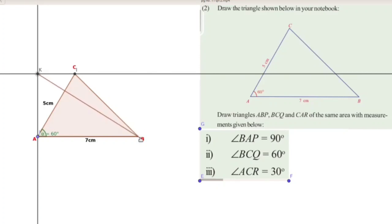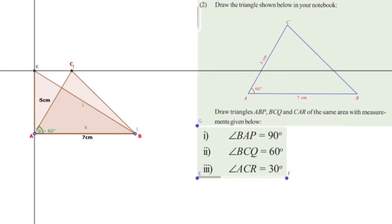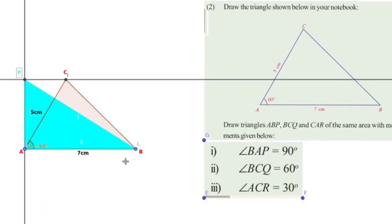This triangle is a right angle triangle with angle BAP equal to 90 degrees. Now we have triangle BAP, a right triangle with angle A equal to 90 degrees. This triangle is equal in area to triangle ABC — both have the same area because AB is 7 cm and the third vertices lie on the same parallel line, so both triangles have the same area.